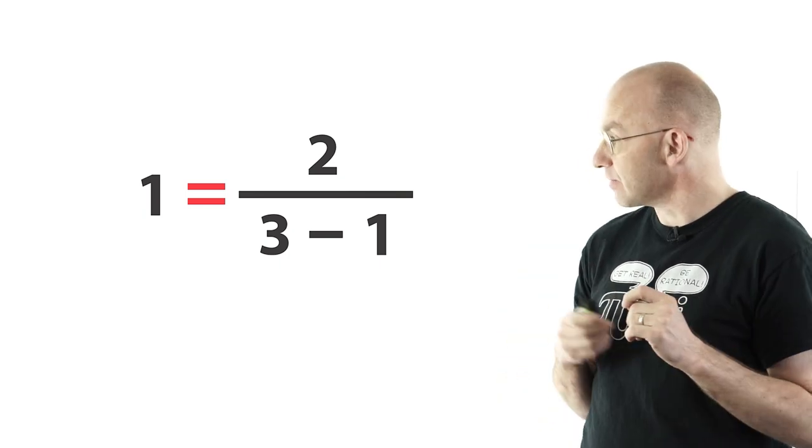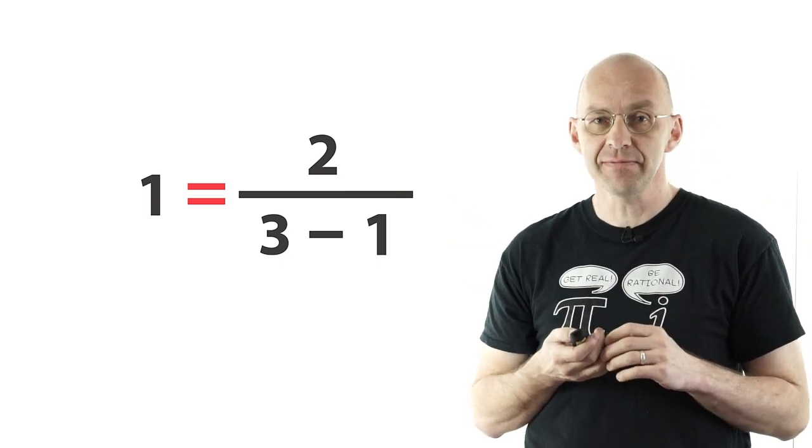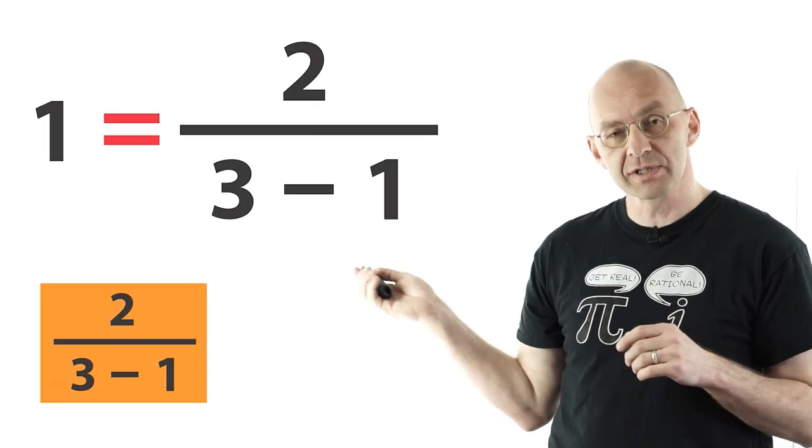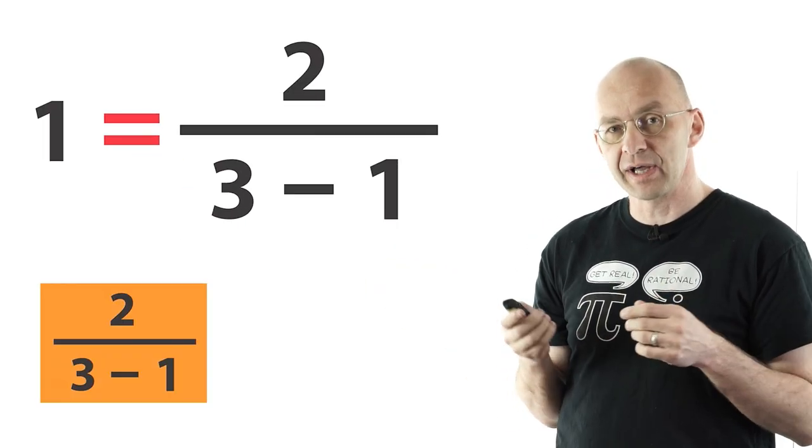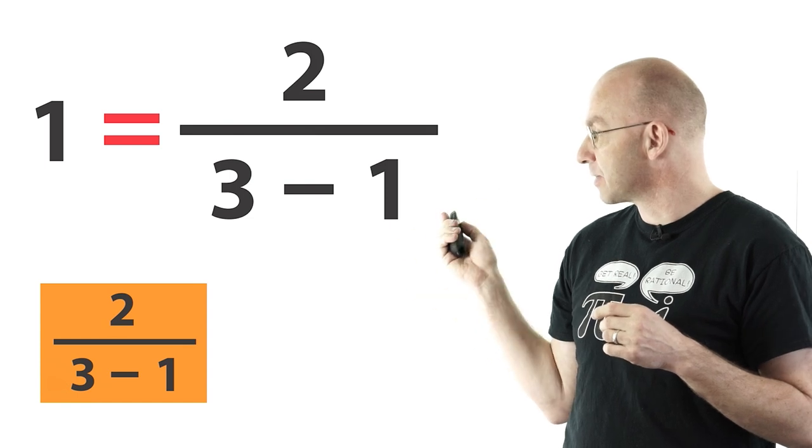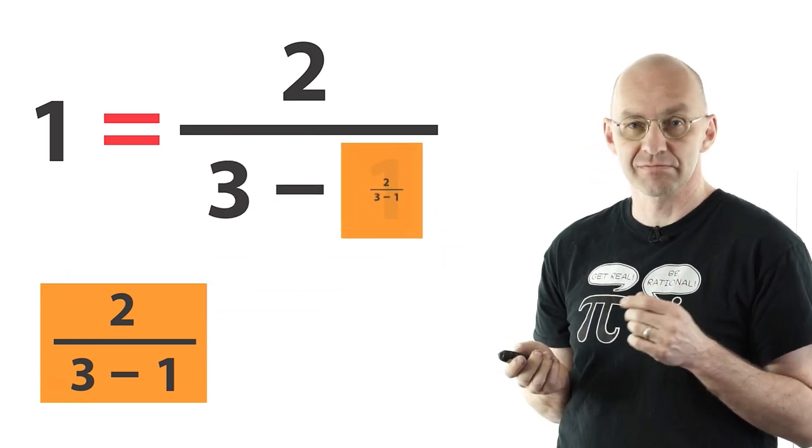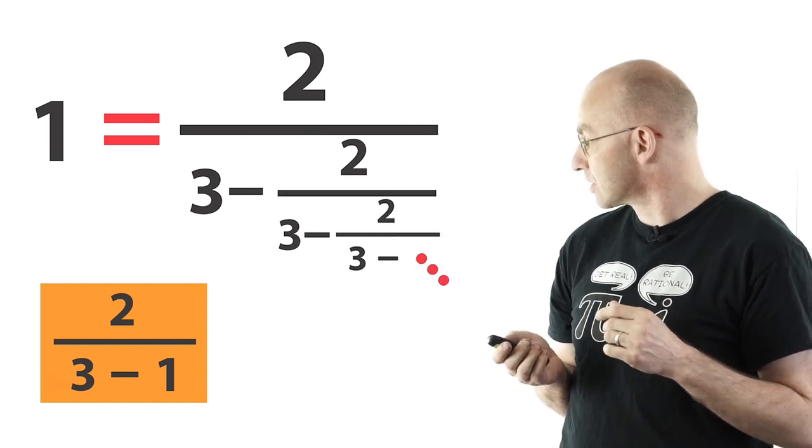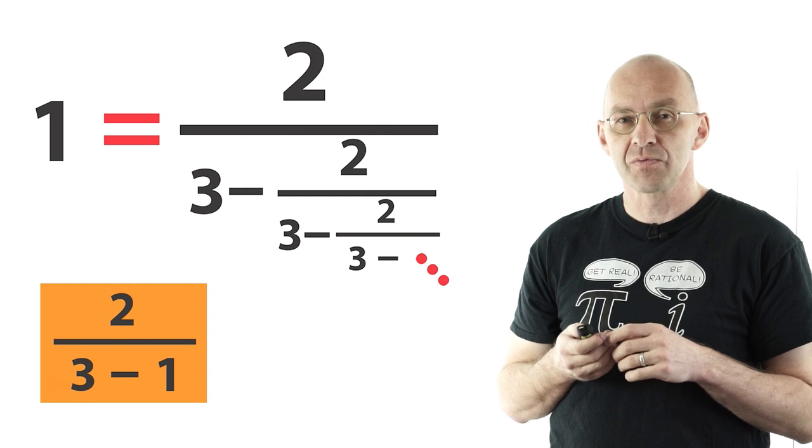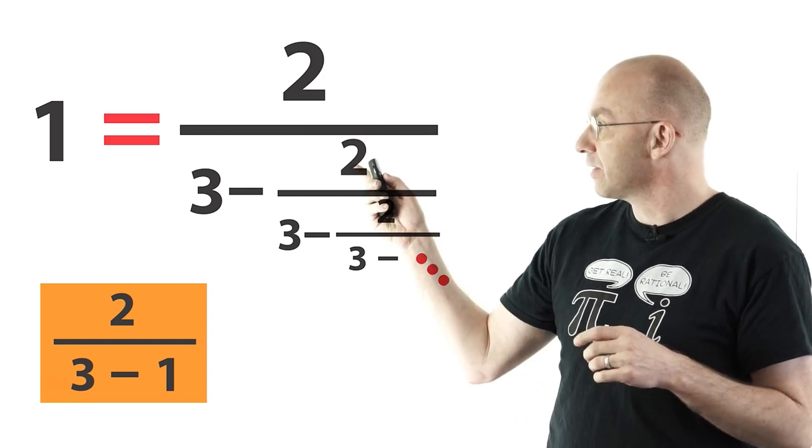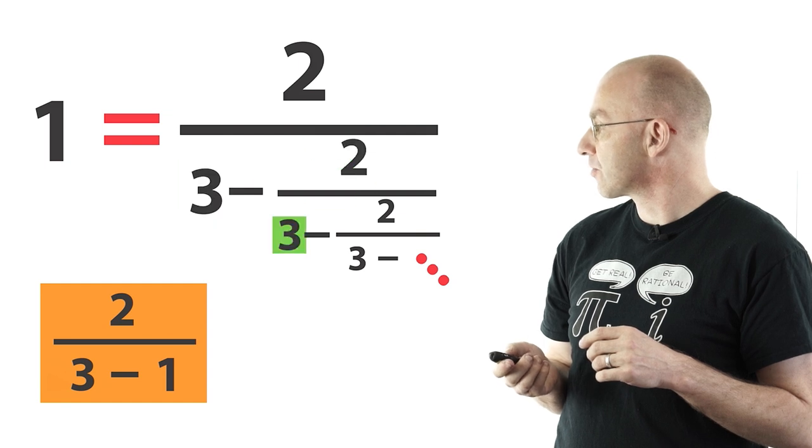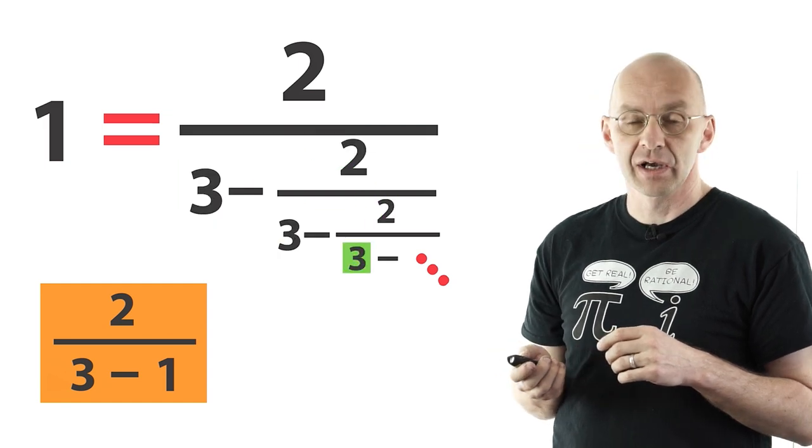To get started let's have a look at this identity here and save the right part in the box. So the box is equal to 1. So wherever I see a 1 I can replace it by the bit in the box. So for example here. Replace. I see another 1. Replace. And you can see I can do this forever. And what that seems to say is that 1 is equal to 2 divided by 3 minus 2 divided by 3 minus 2 divided by 3 and so on.